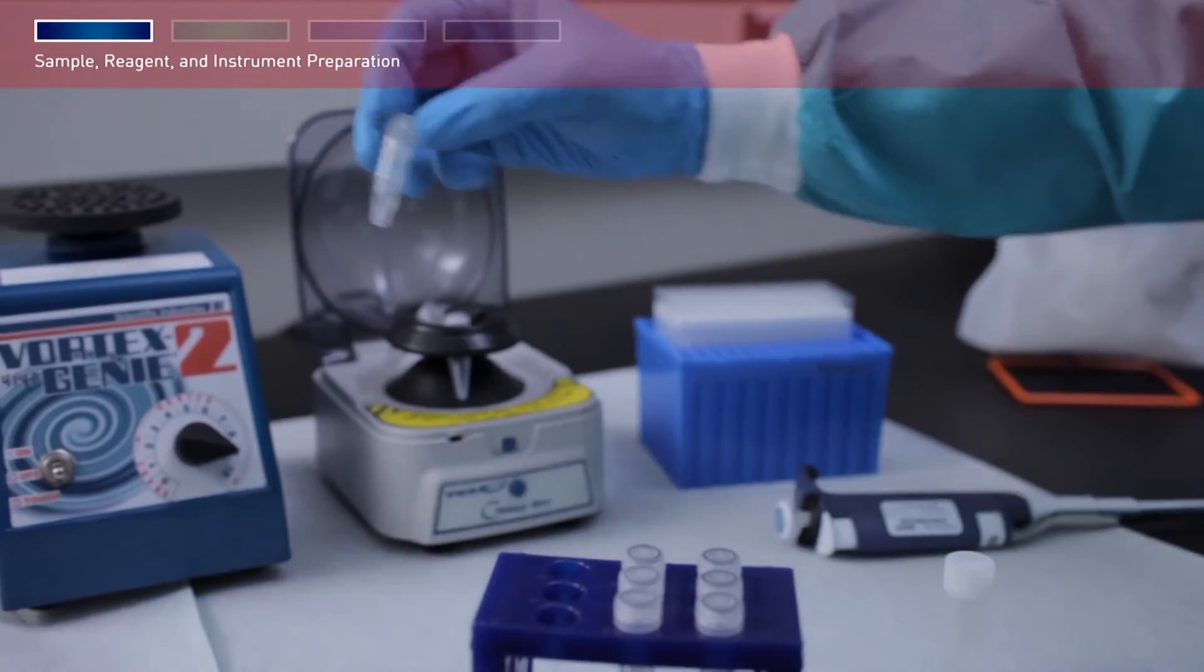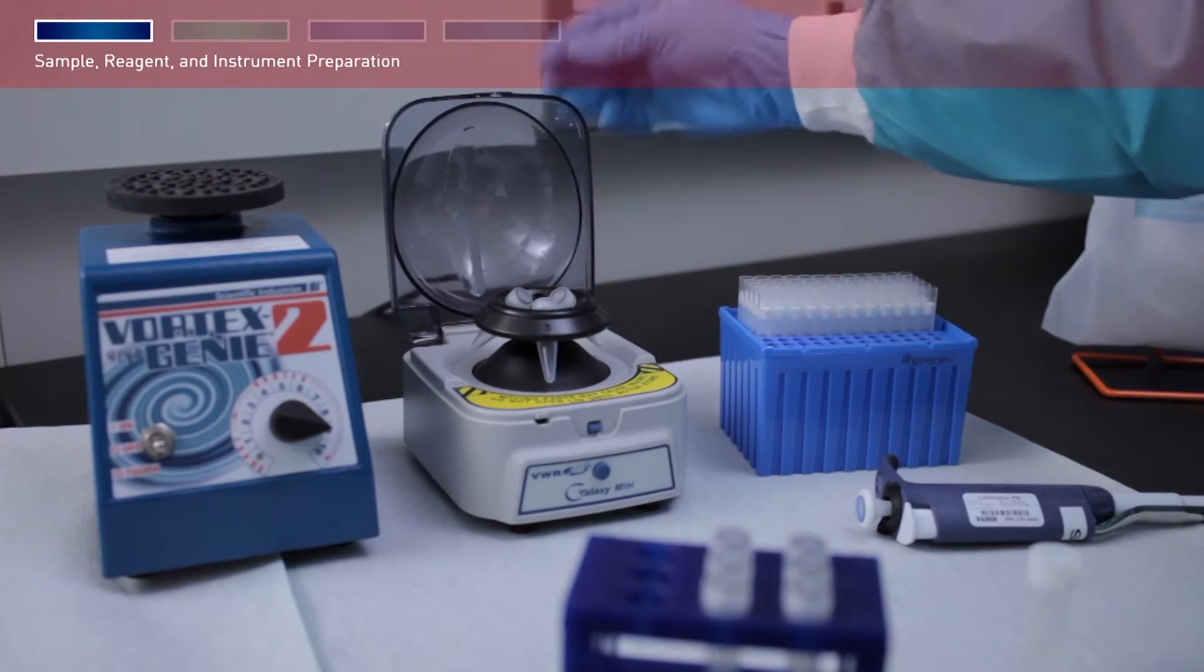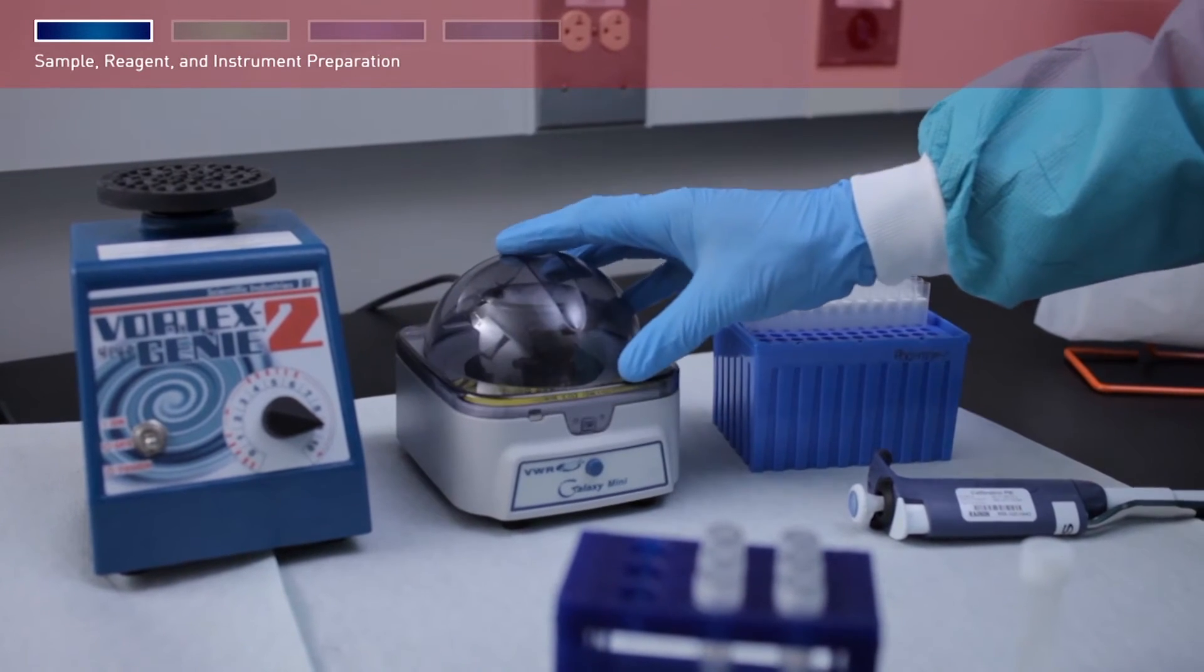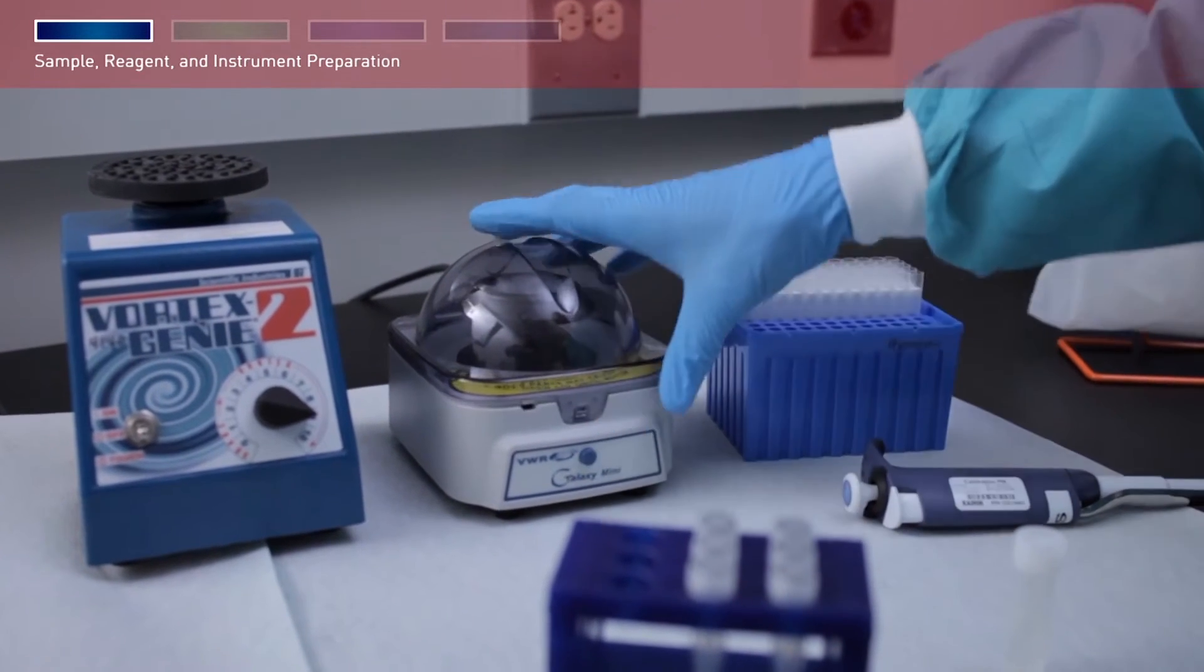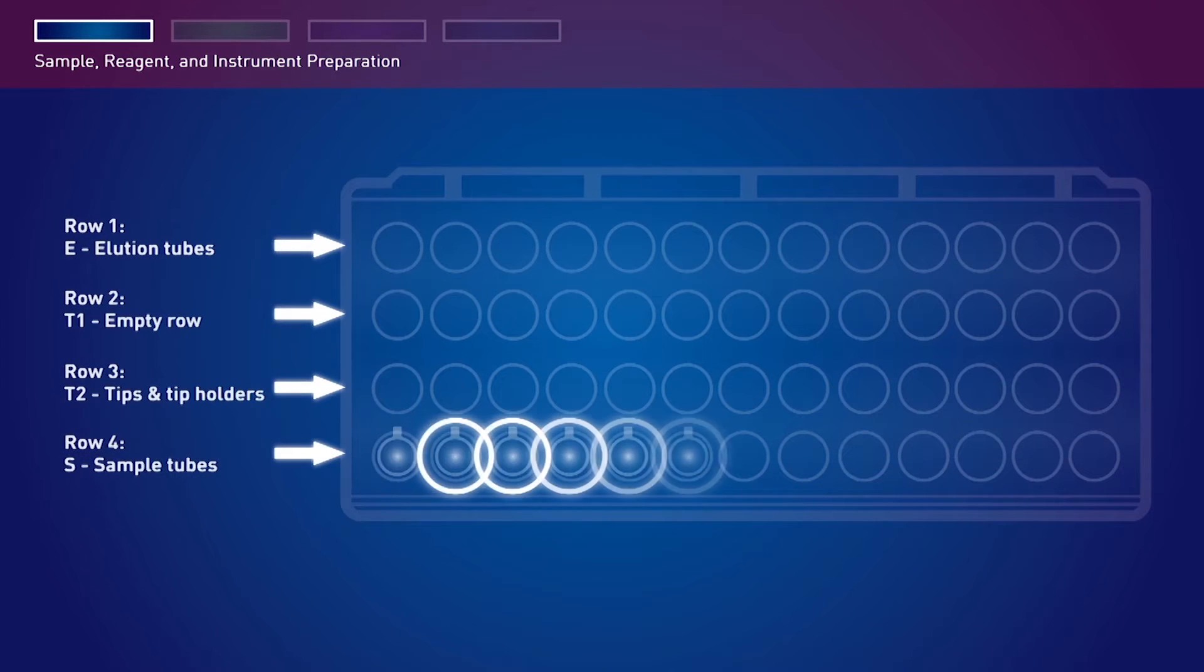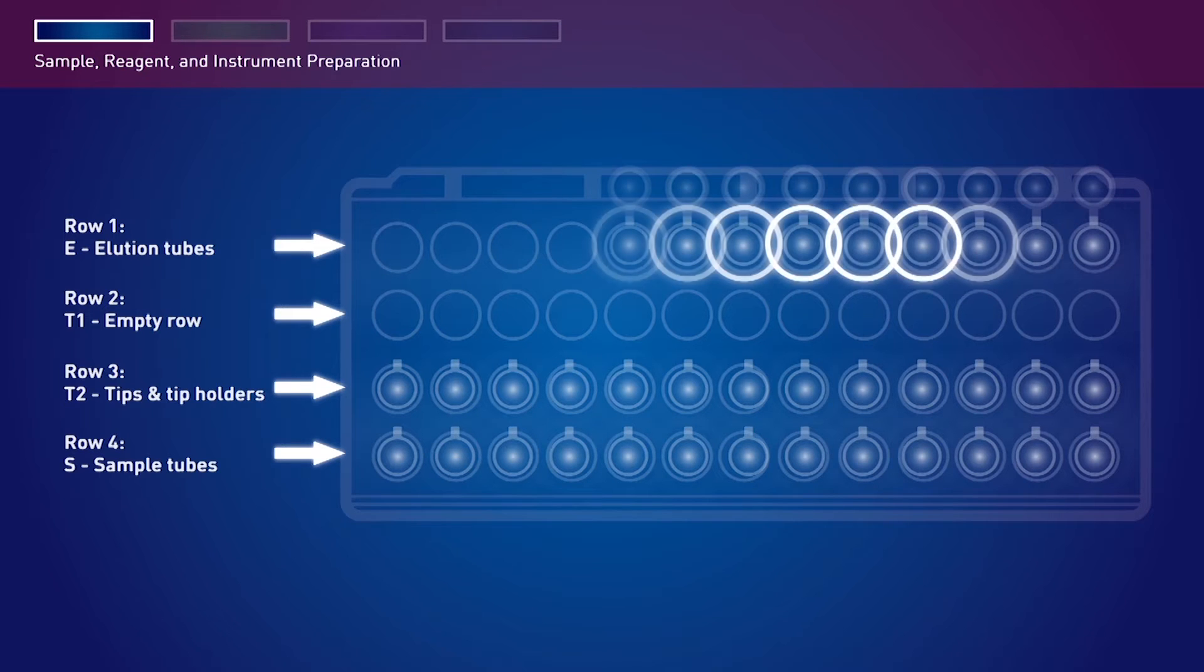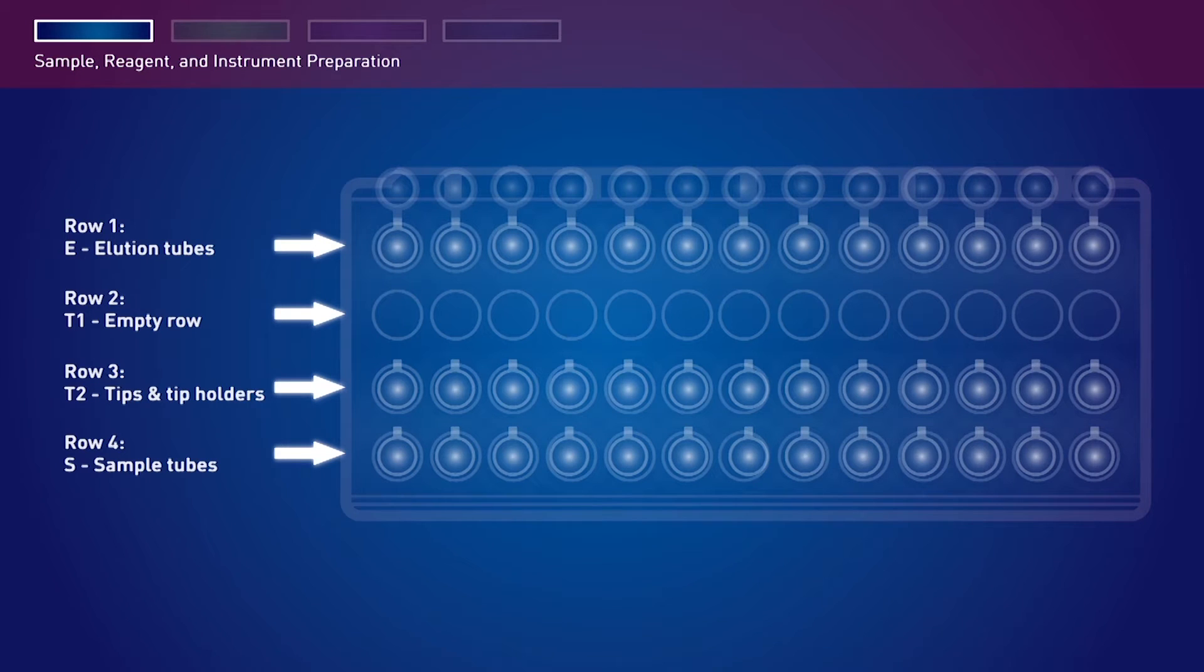Cap the tubes and vortex, then briefly spin to collect the samples to the bottom of the sample tube. Remove the screw caps and load the sample tubes into row S, fourth row of the tip and tube rack. In row T2, third row, load Automate Express system tips inserted into tip holders. Leave row T1, second row, empty. Row E, first row, load with labeled PrepSeek kit elution tubes with the caps open and secured.